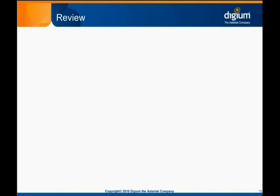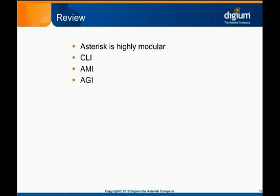Now you know a little bit about the basic structure of Asterisk. It's highly modular with a relatively simple core supported by various types of modules that provide most of Asterisk's functionality. You also know more about the CLI, AMI, and AGI interfaces that allow for external communication with and control of Asterisk. In the next chapter, we'll start putting this knowledge to work by setting up an IP phone and preparing to make our first call. First though, we'll round out this chapter by learning how to use the Asterisk command line interface.